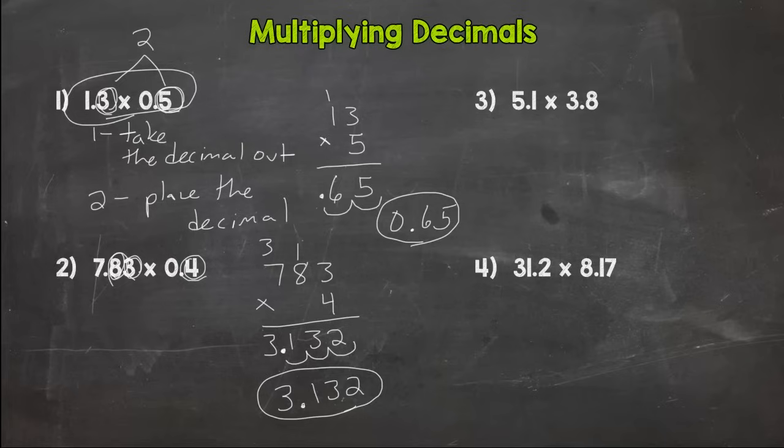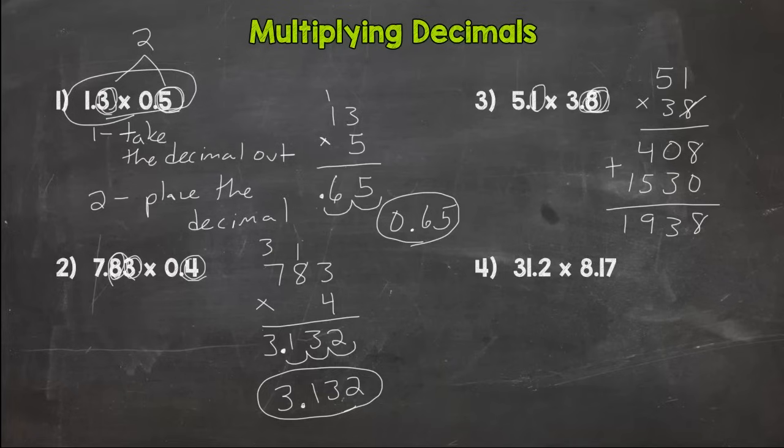Number three. What's our first step? Hopefully you're thinking take the decimal out. So we do 51 times 38. 8 times 1 is 8. 8 times 5 is 40. Done with the 8. We need a placeholder 0 for this 3 here. 3 times 1 is 3. 3 times 5 is 15. We need to add our partial products here and we get 1938. Let's check our original problem. We have 1, 2 decimals or two digits behind or to the right of a decimal. So that means our answer will have two digits or two numbers to the right of the decimal. So 19.38.